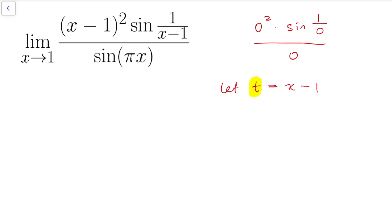Then our limit will become the limit of the function t² sin(1/t) all divided by sin(π(t + 1)) because as t equals x - 1, x will then equal t + 1. And we're doing the limit of this fraction as t tends to 0.